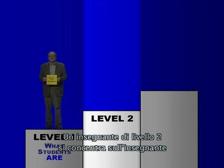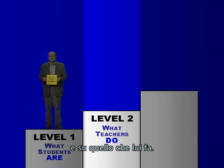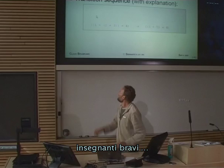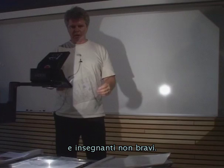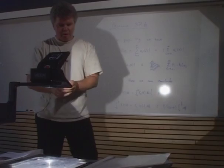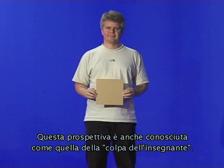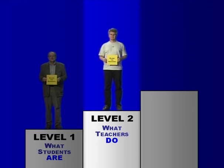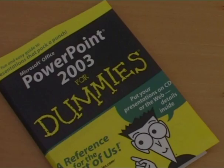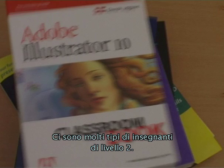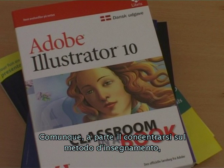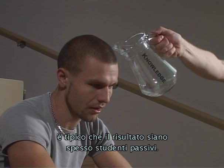A level two teacher has the focus on the teacher and is concerned with what the teacher does. From this perspective, there are good teachers and bad teachers. This perspective is also known as the blame-the-teacher perspective. A so-called good level two teacher will attempt to arm himself with an armada of teaching techniques, tips, and tricks. There are many types of level two teachers. However, common for most of these, apart from having a teacher focus, is that the result is passive students.